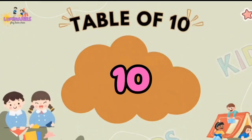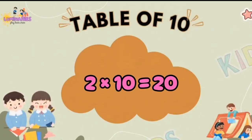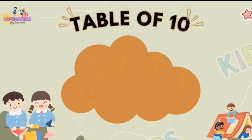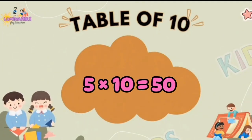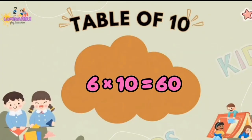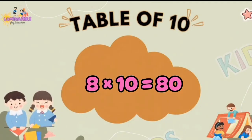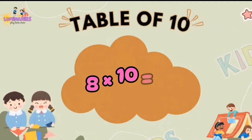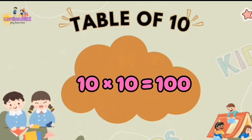Table of 10. 1 x 10 is 10. 2 x 10 is 20. 3 x 10 is 30. 4 x 10 is 40. 5 x 10 is 50. 6 x 10 is 60. 7 x 10 is 70. 8 x 10 is 80. 9 x 10 is 90. 10 x 10 is 100.